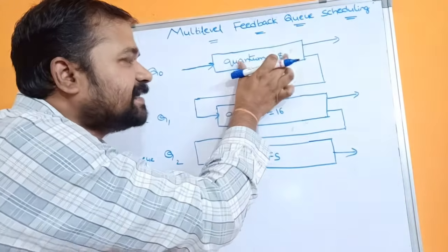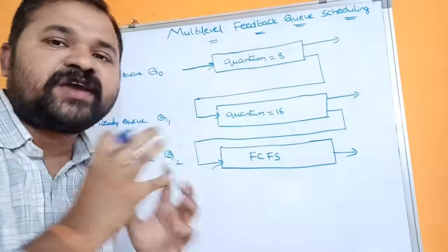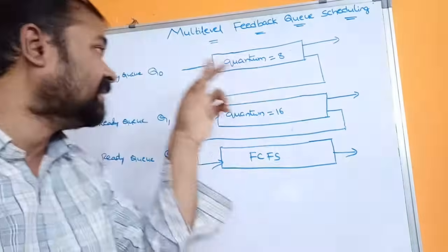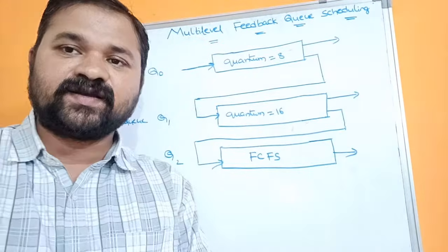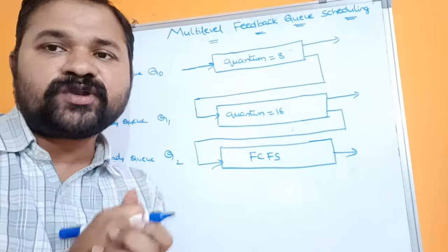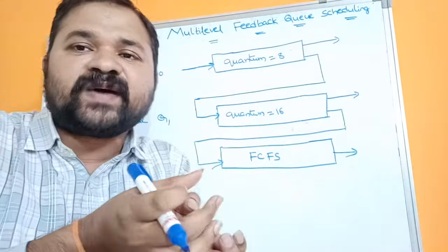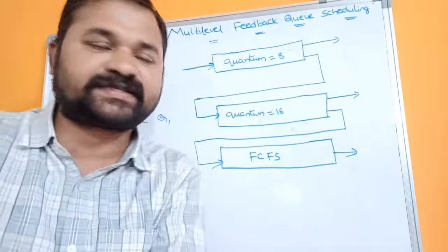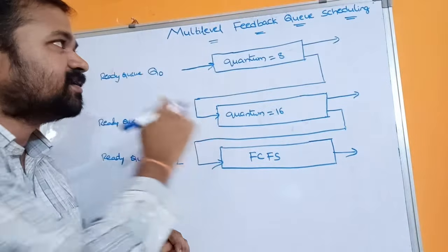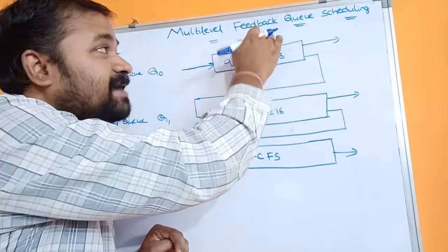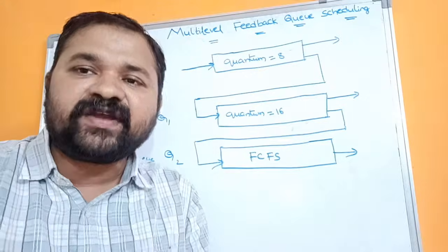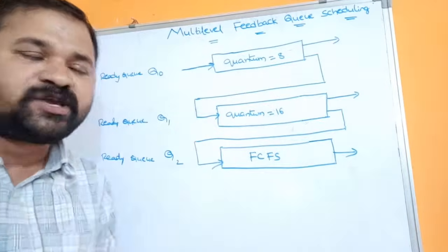For example, assume in ready queue Q0 there are 5 processes, where 4 processes have a burst time less than 8 milliseconds and 1 process has a burst time greater than 8 milliseconds. That one process with burst time greater than 8 milliseconds will be moved to ready queue Q1. This is the advantage of multi-level feedback queue scheduling — processes can be moved between the multiple ready queues.